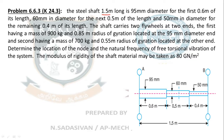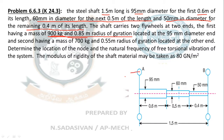The steel shaft is 1.5 meters long: 95 mm in diameter for the first 0.6 meters, 60 mm in diameter for the next 0.5 meters, and 50 mm in diameter for the remaining 0.4 meters. The shaft carries two flywheels at the two ends. The first flywheel has a mass of 900 kg and 0.85 meter radius of gyration, located at the 95 mm diameter end.